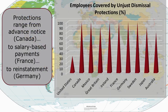As a reminder from that earlier video, the protections in these different countries can be quite different. In Canada, the unjust dismissal protection consists of making sure employees are provided sufficient advance notice before they're fired. In France, the unjust dismissal protection might be a salary payment. And in some other countries, like Germany, the unjust dismissal protection can be reinstatement.